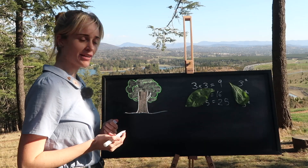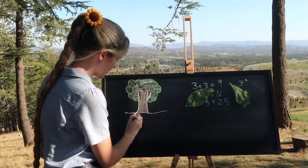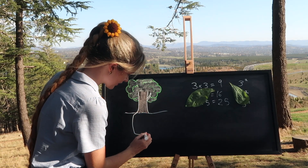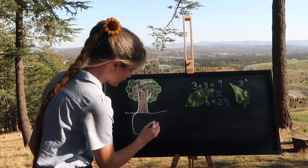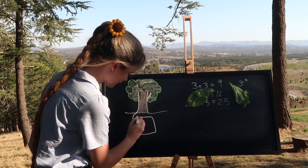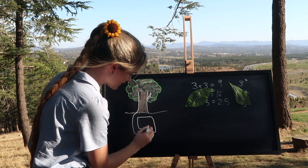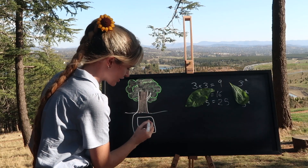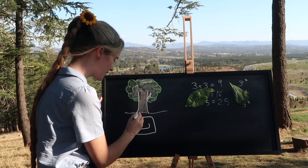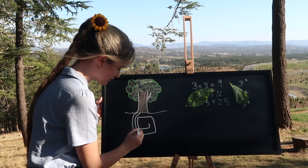Roots are what allow a tree to grow. The better the roots, the more nutrients they can collect and the more support they can provide. Just like in life, having support can make it feel easier to achieve great things, although support can often be hard to come by or difficult to recognize.